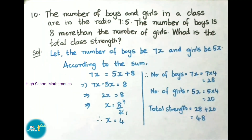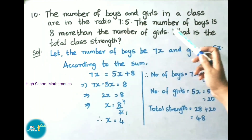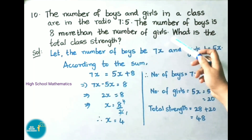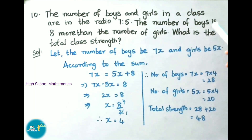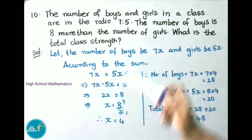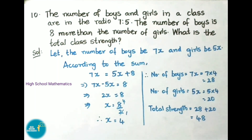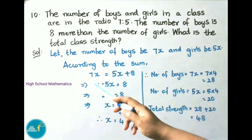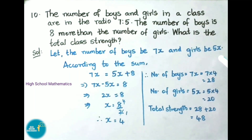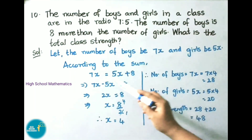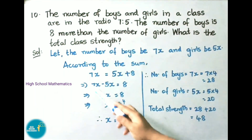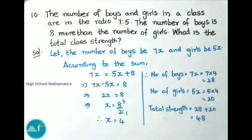See now question number 10: the number of boys and girls in the class are in the ratio 7 is to 5. The number of boys is 8 more than the number of girls. What is the total class strength? Let the number of boys be 7x and girls be 5x. According to the sum, 7x equals to 5x plus 8, that is number of boys is 8 more than the number of girls.